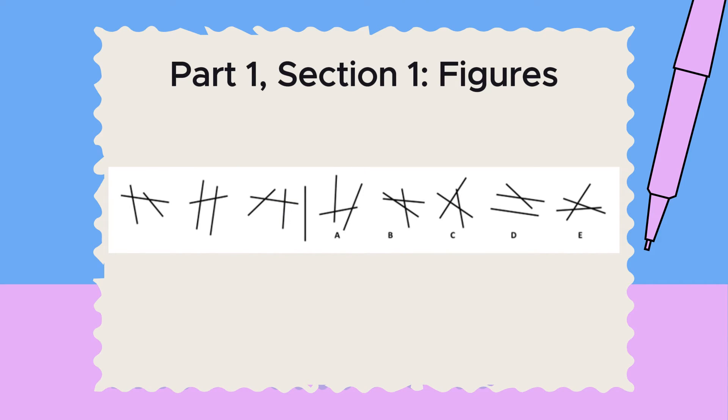The first question type is from the figures section. In each of these questions, the first three figures are similar in some way. Work out how they are the same, then choose the answer choice that shares the same connection. All three figures consist of three lines. One line is intersected by the other two lines, which do not intersect each other. Now, we need to look at the answer choices and find another figure with the same characteristics. We can see that option A shares the same connection as the three given figures, so this is the correct answer.